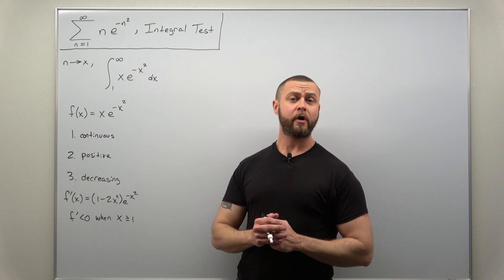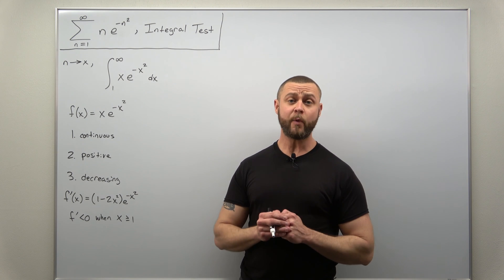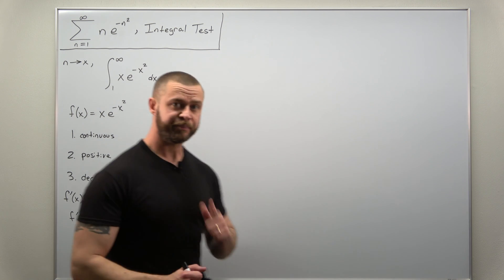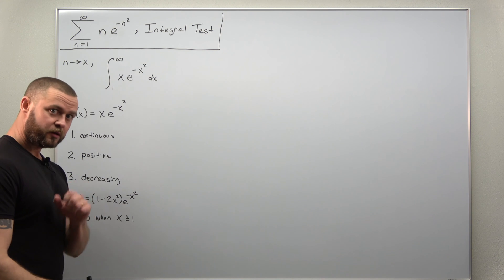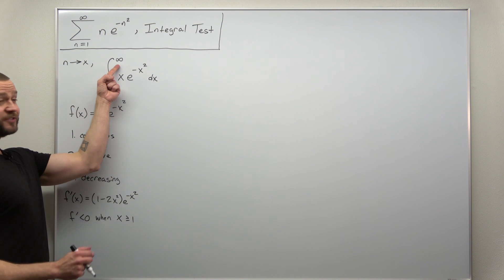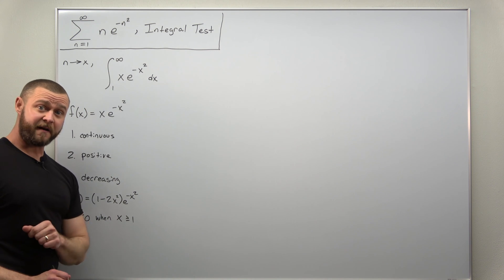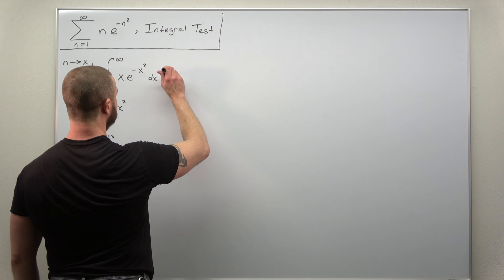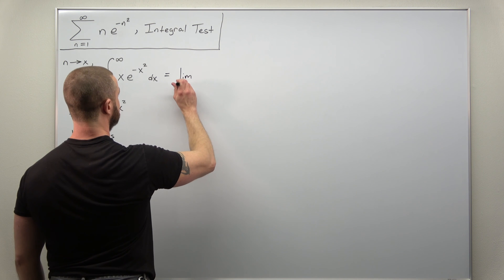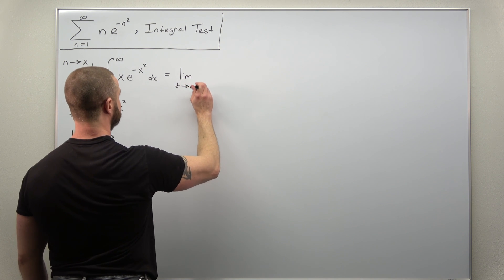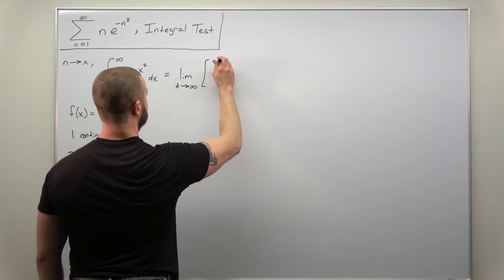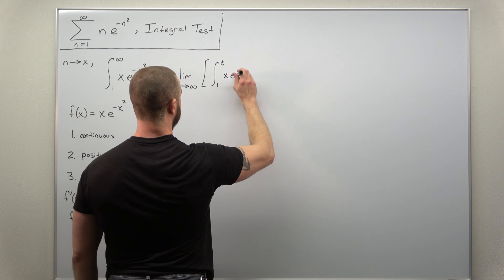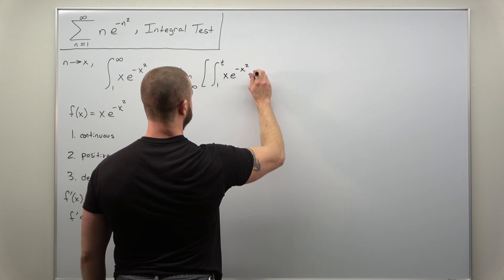Next we'll evaluate this improper integral step by step to determine if it converges or diverges. We replace infinity with a variable t and take the limit as t approaches infinity. The setup is: the limit as t approaches infinity of the integral from 1 to t of x times e to the negative x squared dx.